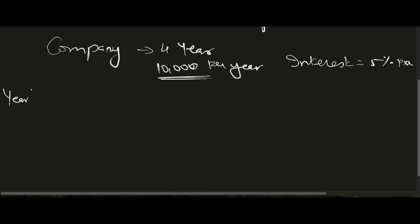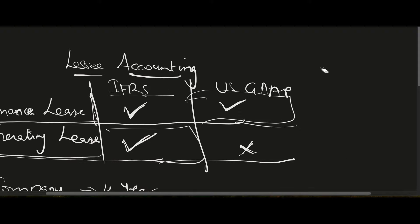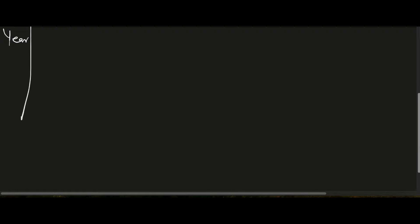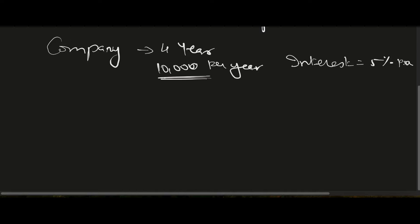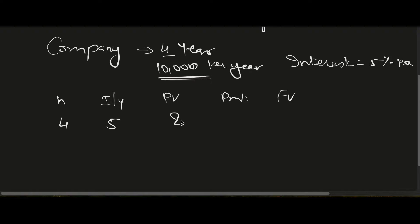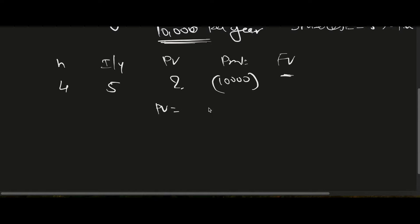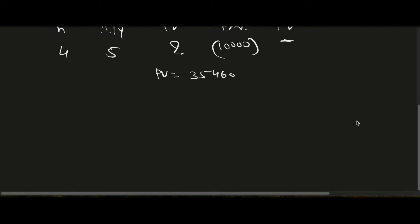Before setting up the table columns, we need to find the borrowed amount — the present value. Using a financial calculator: N = 4, interest = 5%, payment = 10,000 per year, future value = 0. The present value works out to 35,460. This is the amount as if the company has borrowed.